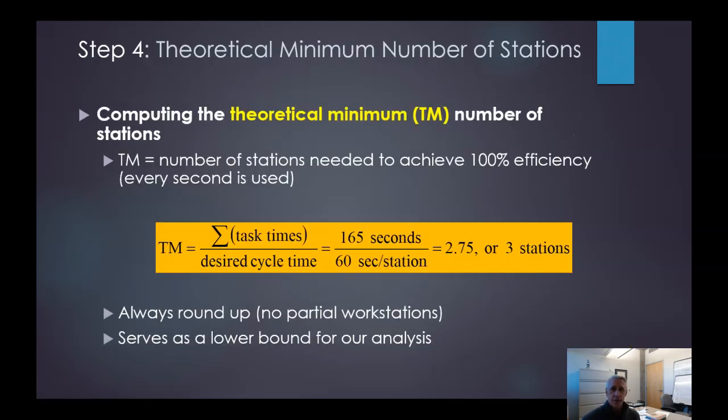So now we're going to look at the theoretical minimum number of stations that we need to produce what we want. So we want to achieve near to 100% efficiency if we get every second used. So if we sum up the task times again, which we've already done, it's 165 seconds, divided by the desired cycle time, how many seconds per station, then we get 2.75. Now, we can't have three quarters of a station. We have to have a whole station. So we have to round up. So that rounds up to three stations. So that means we're going to break up these task work into three stations.